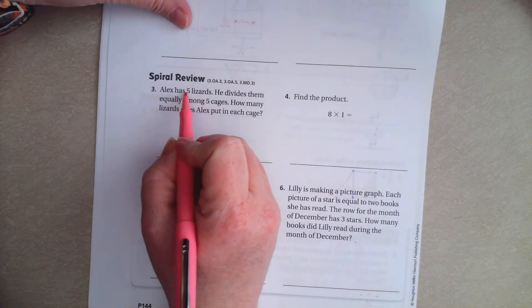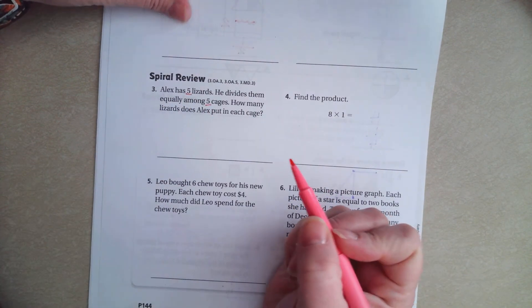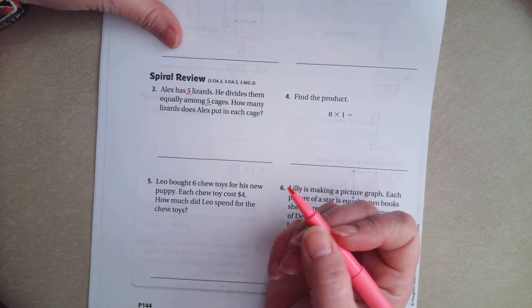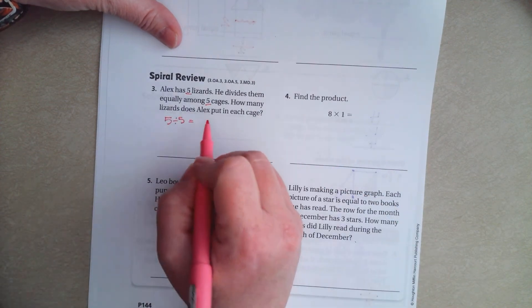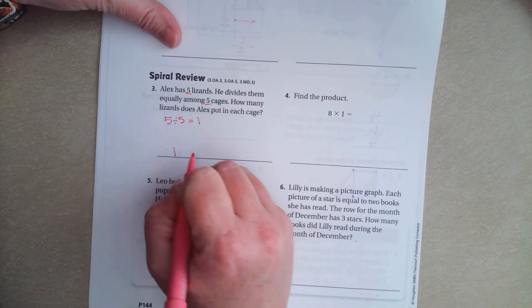Alex has five lizards. He divides them equally among five cages. How many lizards does he put in each cage? Well, five divided by five. Any number divided by itself is one. One lizard.